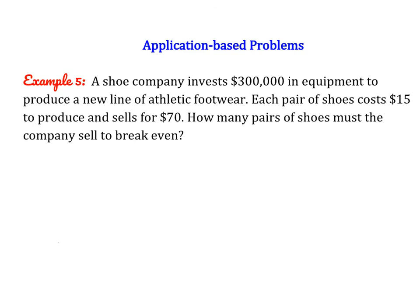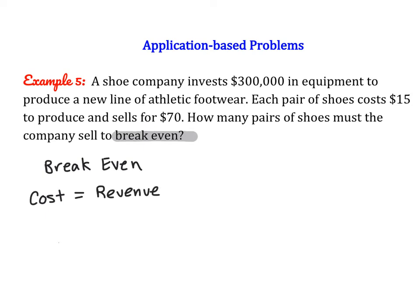Now we're going to try some more application-based problems. A shoe company invests $300,000 in equipment to produce a new line of athletic footwear. Each pair costs $15 to produce and sells for $70. How many pairs must the company sell to break even? To break even, cost must equal revenue — they haven't made a profit but haven't lost money either. Our variable x represents the number of pairs of shoes.